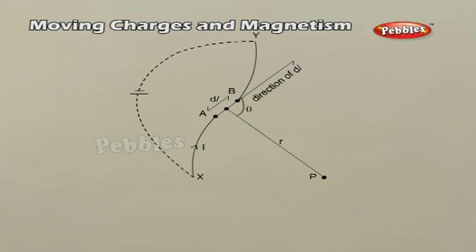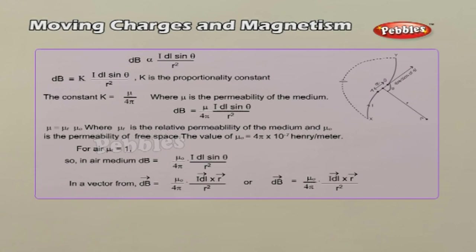Biot-Savart Law is used to calculate the magnetic induction due to a current-carrying conductor. Consider a conductor XY carrying current I. AB = dL is a small element of the conductor. P is a point at distance R from the midpoint O of AB. According to Biot and Savart, the magnetic induction dB at P due to the element of length dL is: directly proportional to the current I, directly proportional to the length of the element dL, directly proportional to the sine of the angle between dL and the line joining the element to the point (i.e., sin θ), and inversely proportional to the square of the distance of the point from the element.